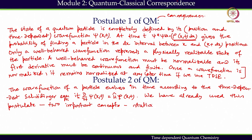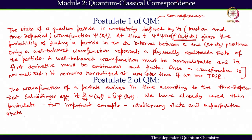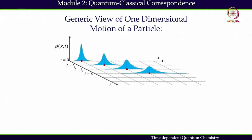The two concepts are: a stationary state, which we learned about in the previous module, and a superposition state. These are the consequences we observed when we applied the variable separation method. It is valuable to see these postulates of quantum mechanics from a time-dependent point of view. We will now look at the generic view of one-dimensional motion of a particle.